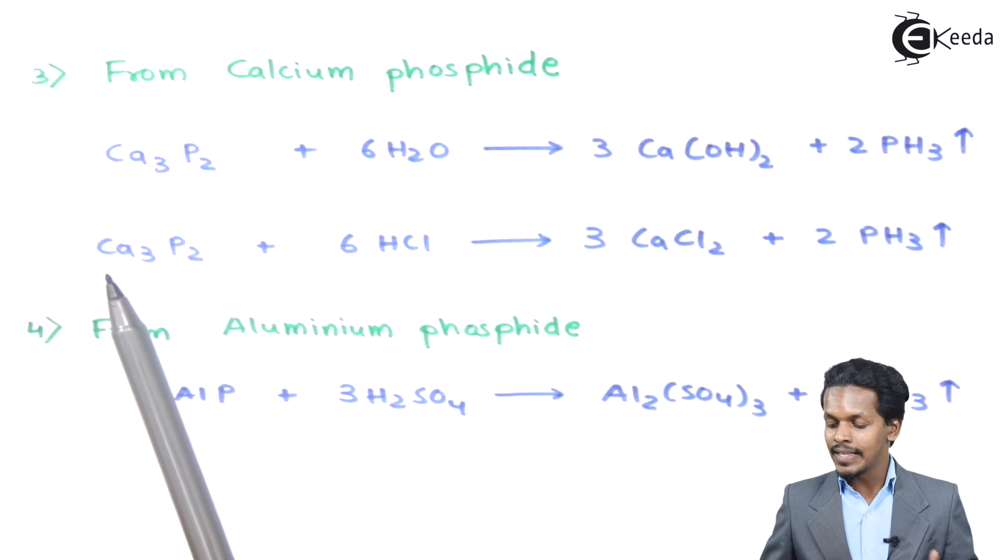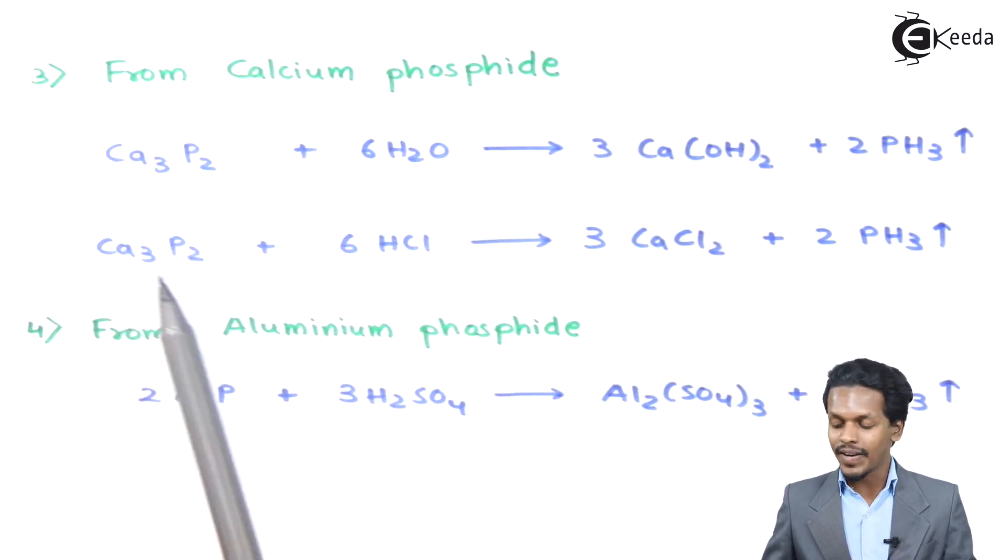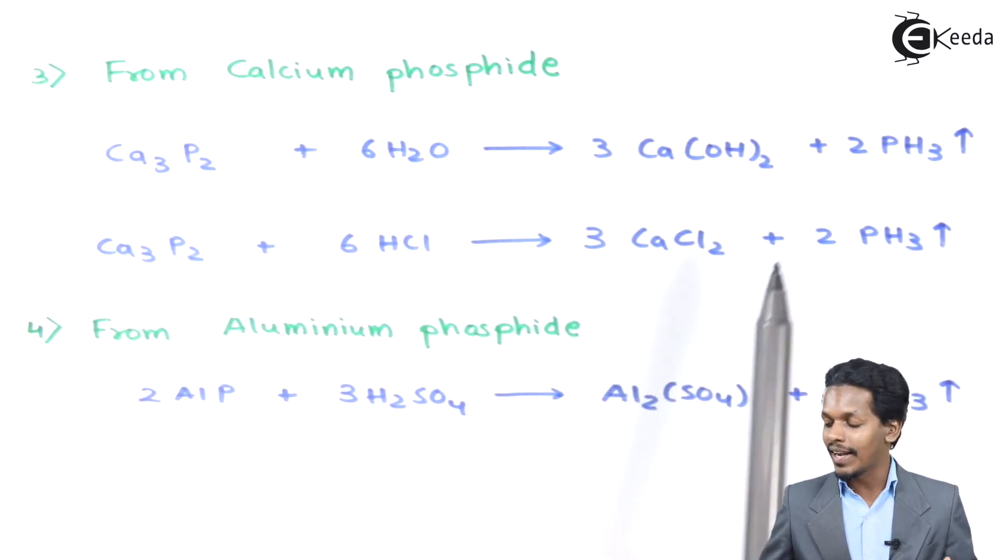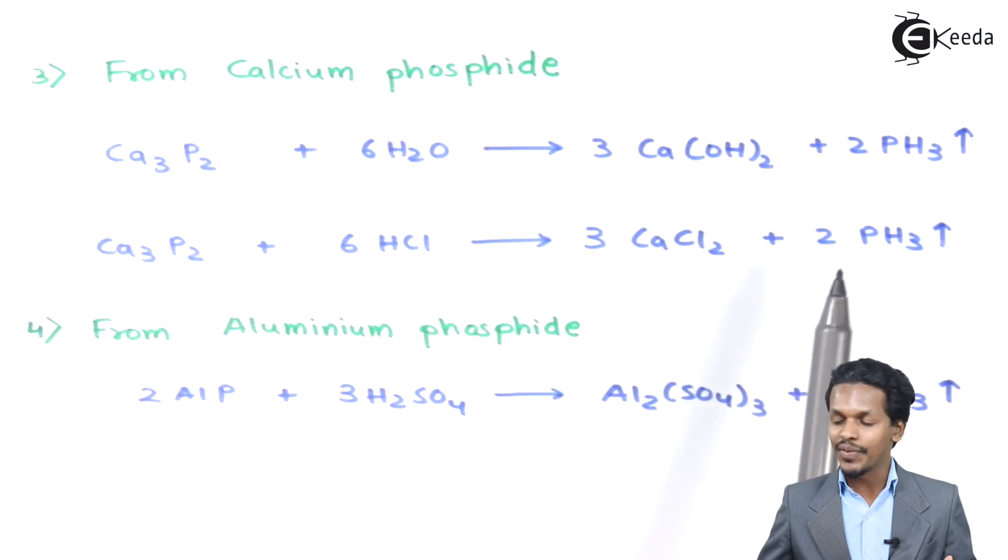Talking about the next one, if calcium phosphide is treated with 6 moles of HCl, the product we could get is 3 moles of CaCl2, calcium chloride, and the byproduct is 2 moles of PH3. Therefore, this is the method to obtain PH3 from calcium phosphide.